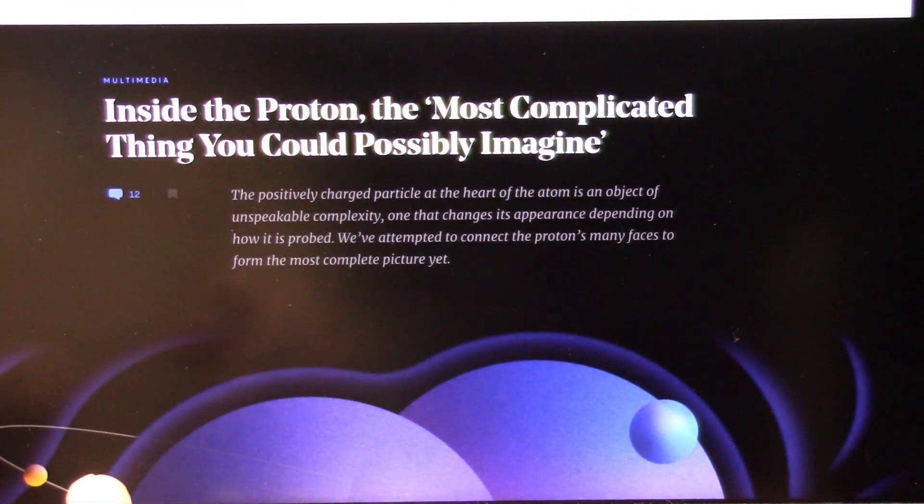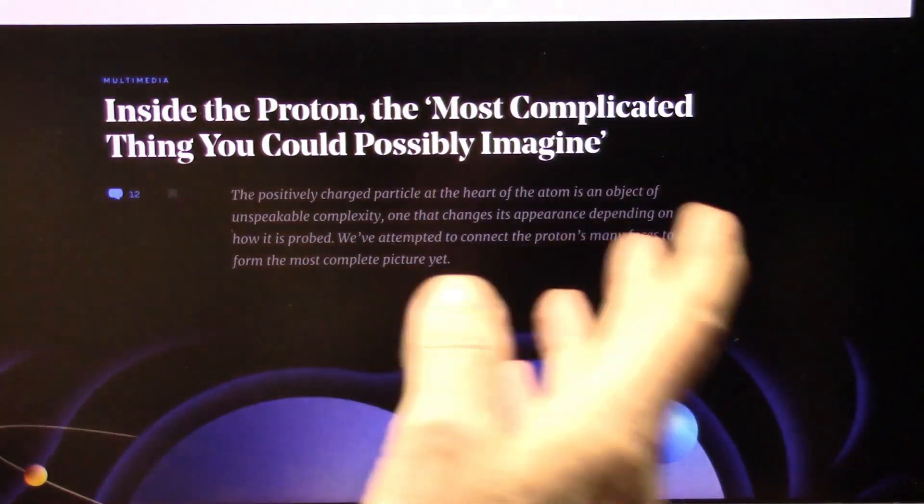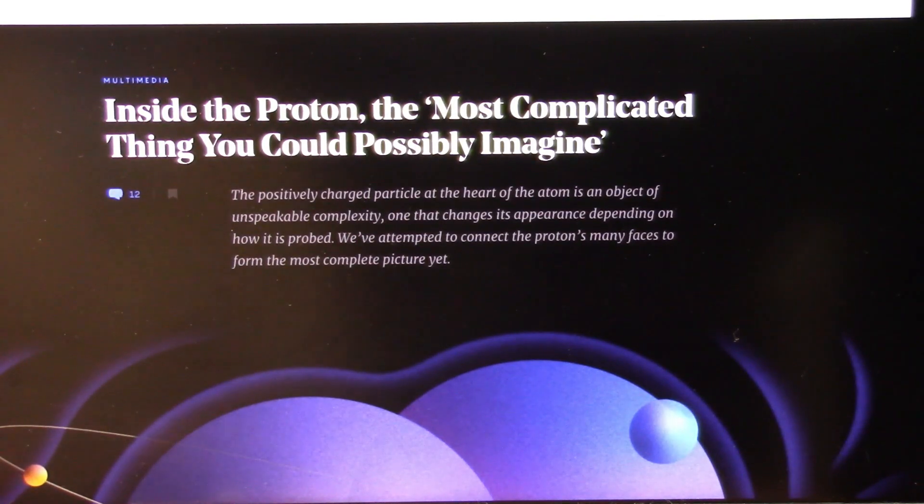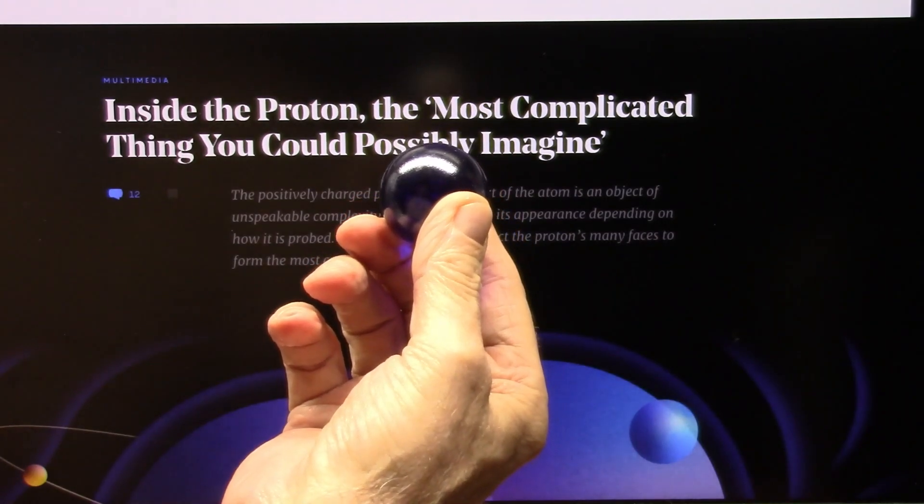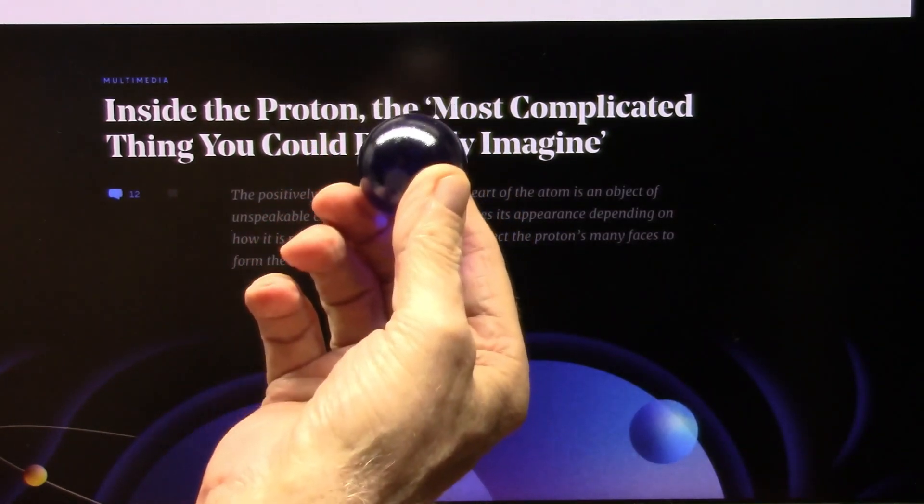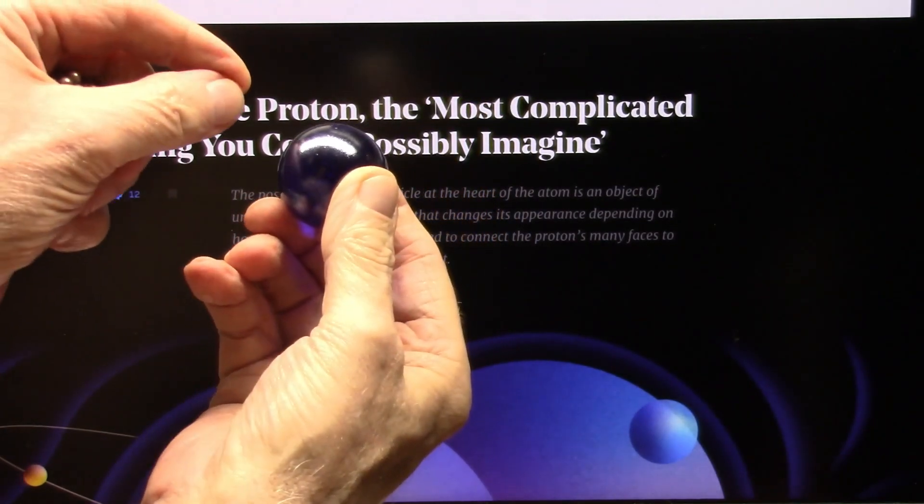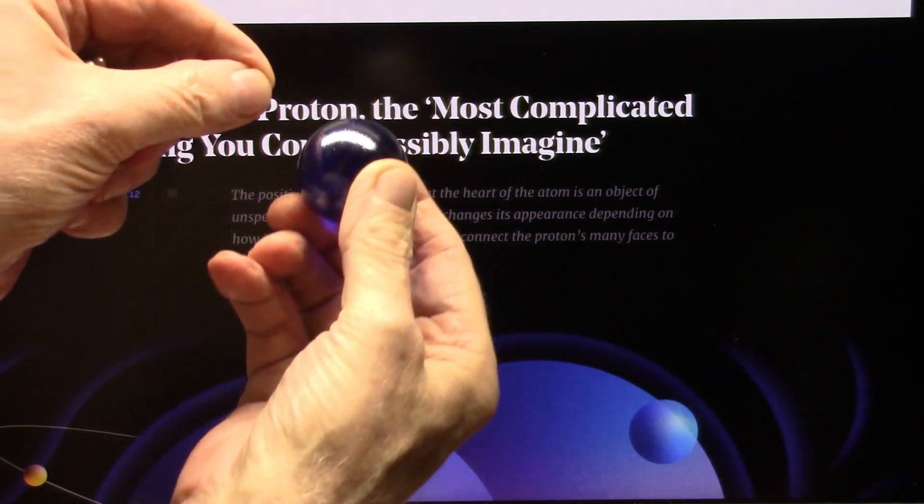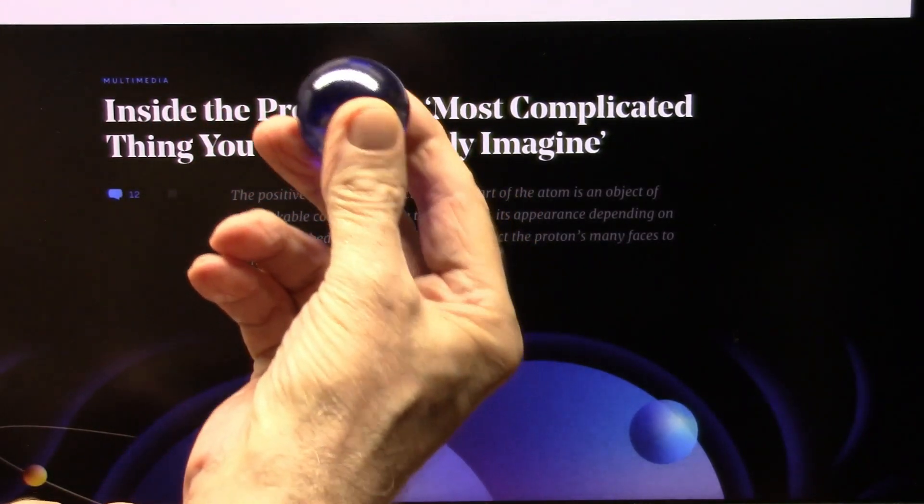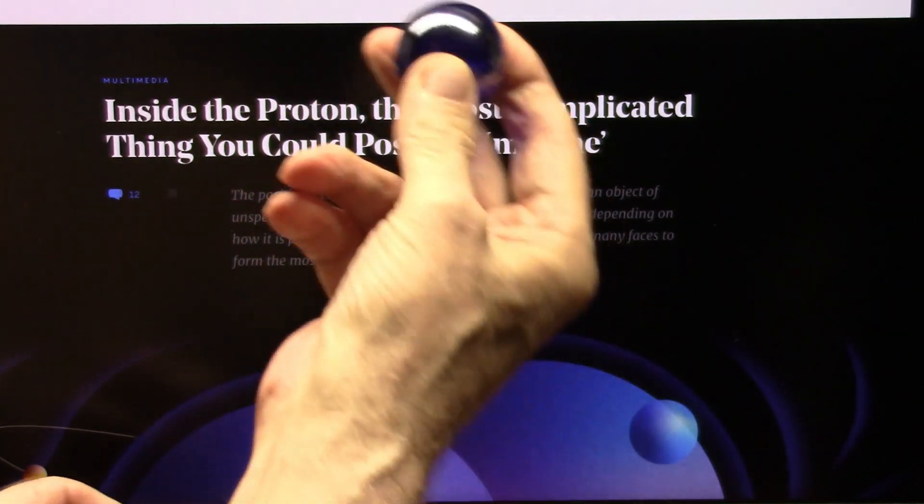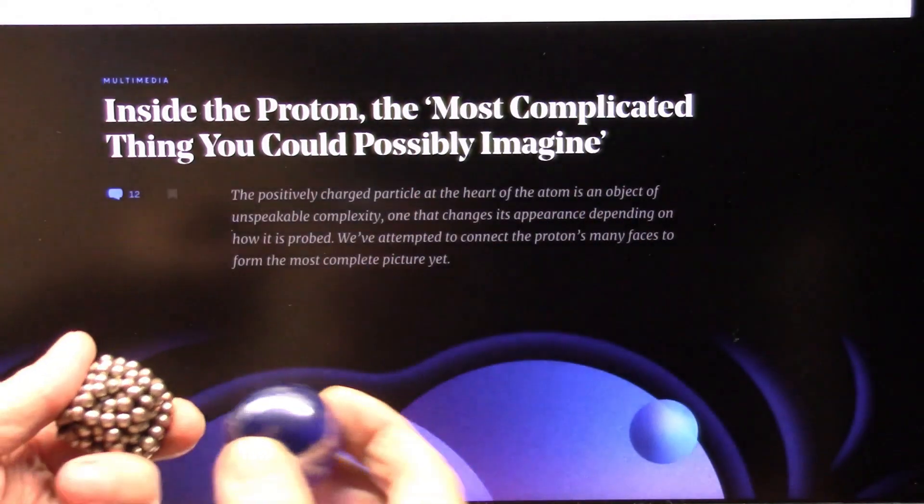Inside the proton, the most complicated thing you could possibly imagine. What is a proton? They say a proton is the core of a hydrogen atom, a hydrogen-1 atom. It's one big proton. And then they have one tiny little electron surrounding it. And that proton is just one big positive. Well, now they find there's quarks, and there's this, and there's that. And it's just very, very complicated now. Well, it is not complicated.